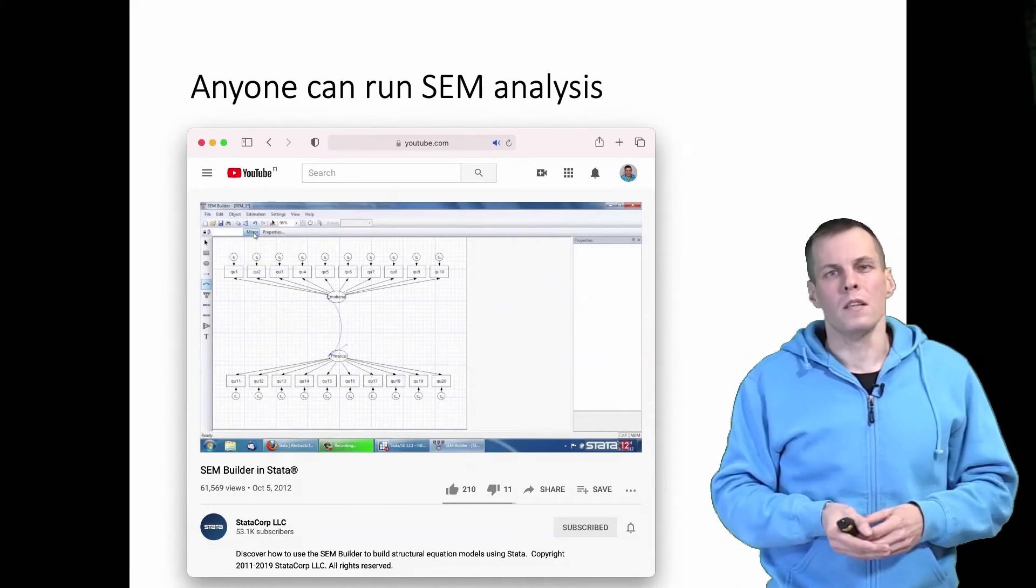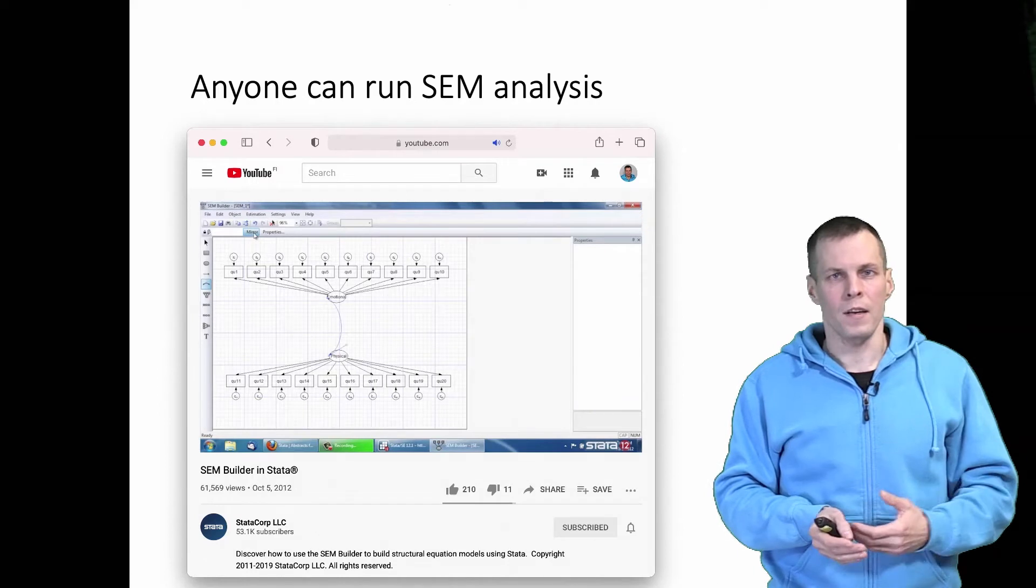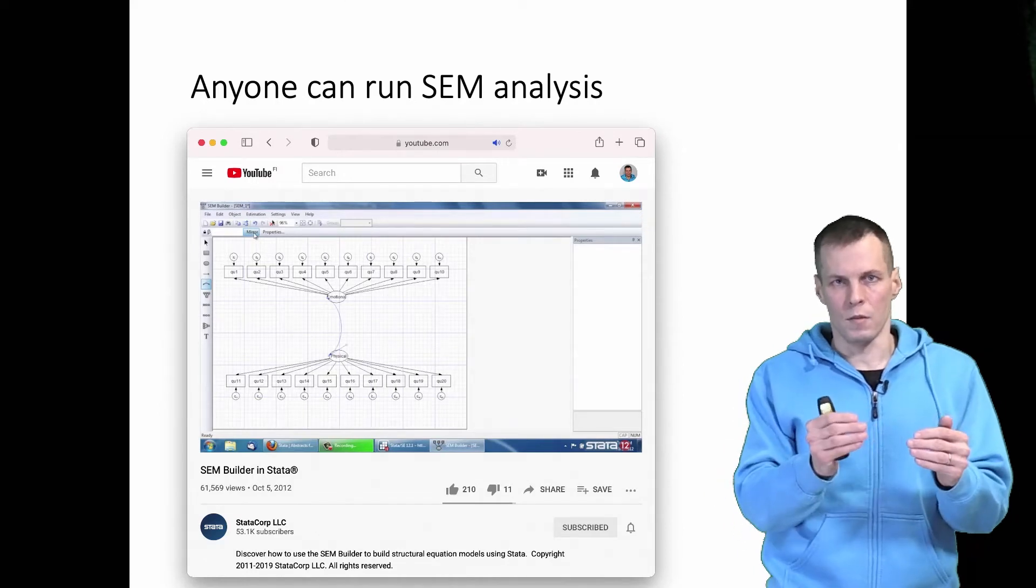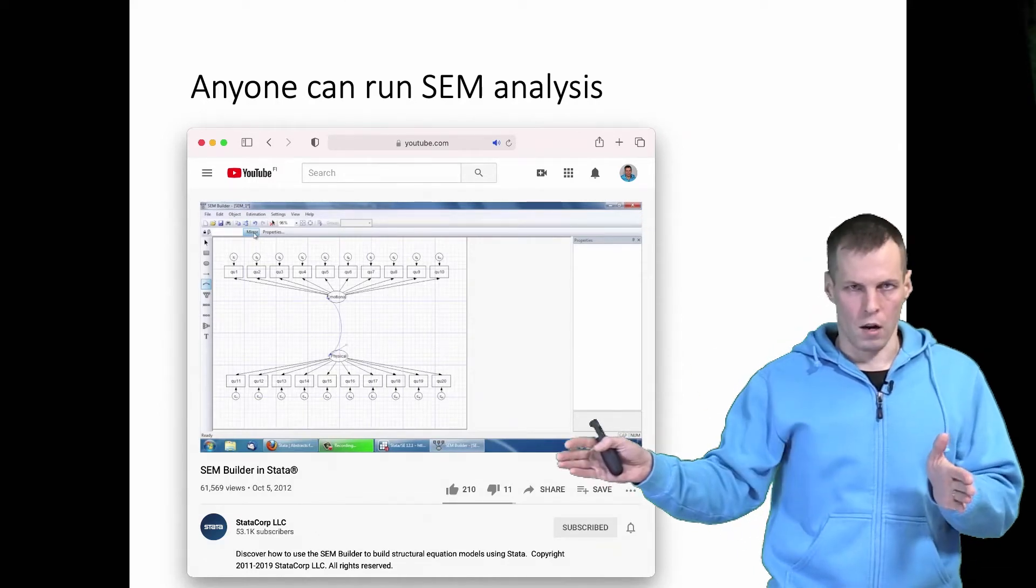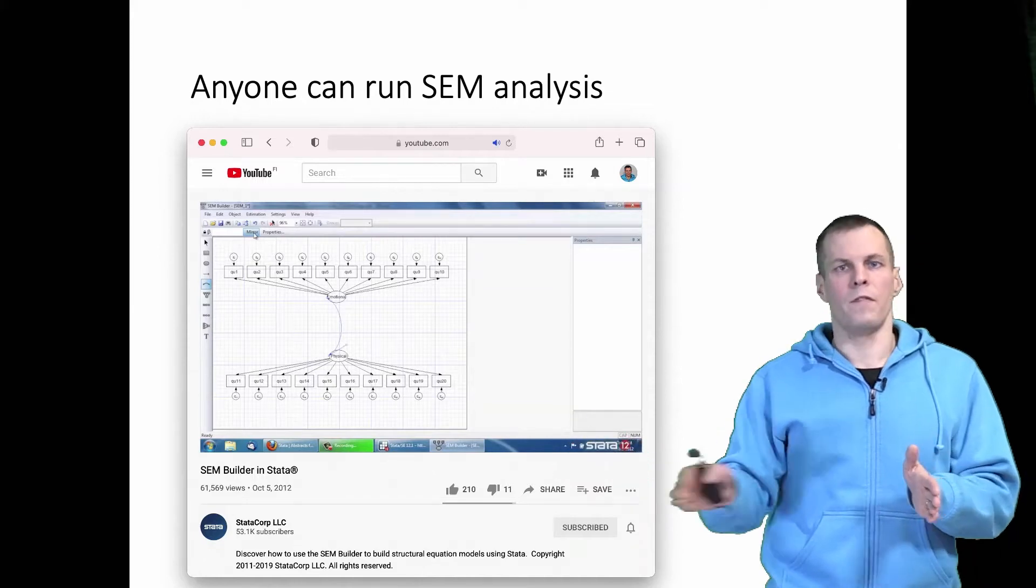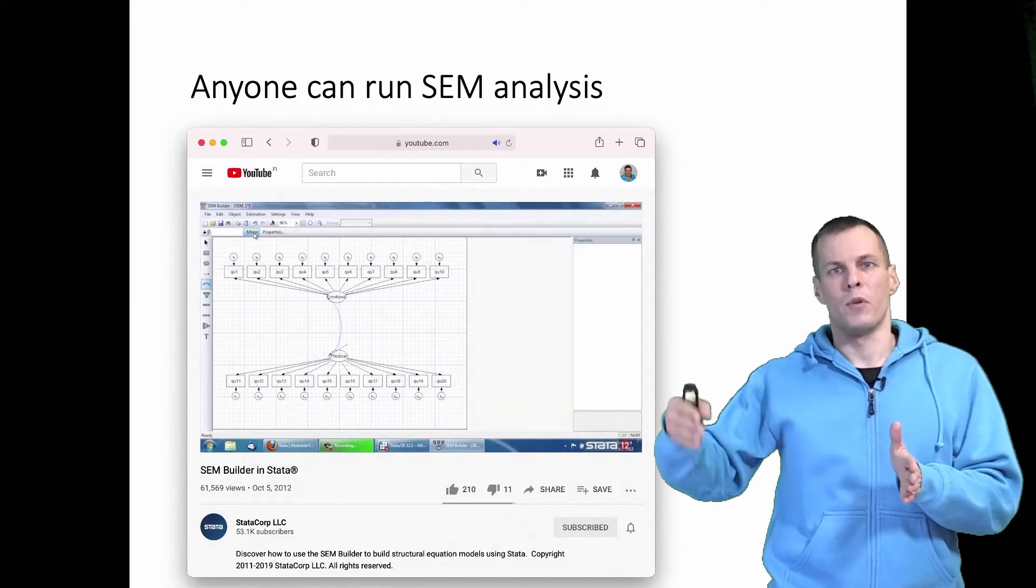Then I can also teach the student that if something called a CFI is more than 0.9, they need to declare that their model is good. If it's less than 0.9, the model is bad.